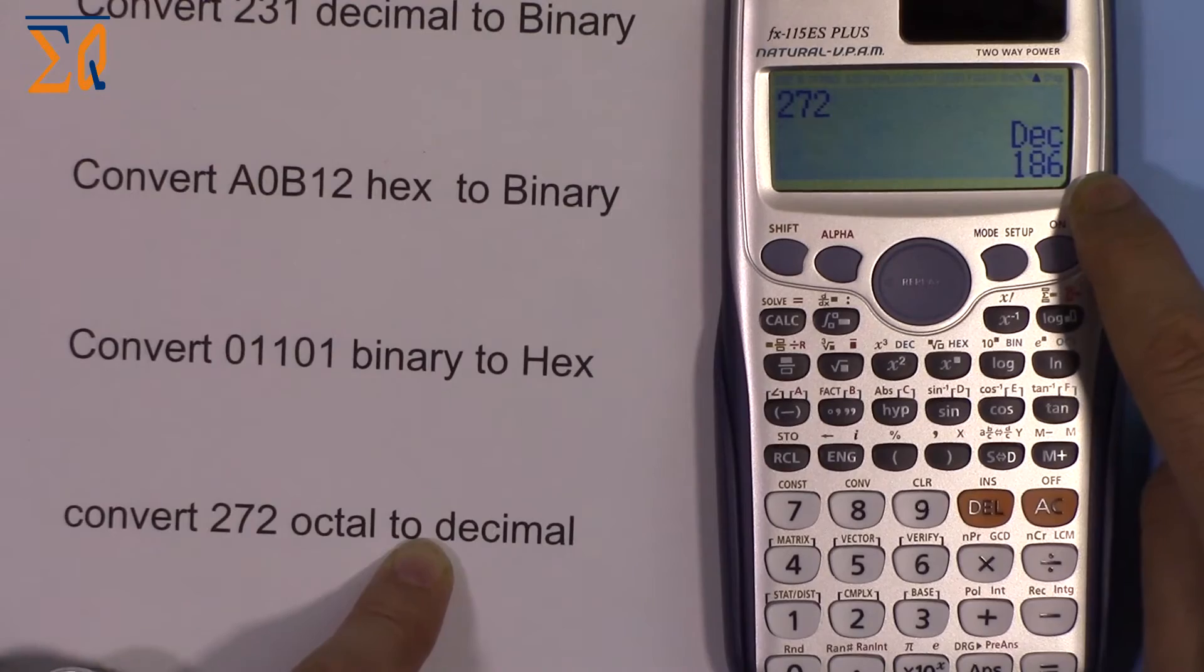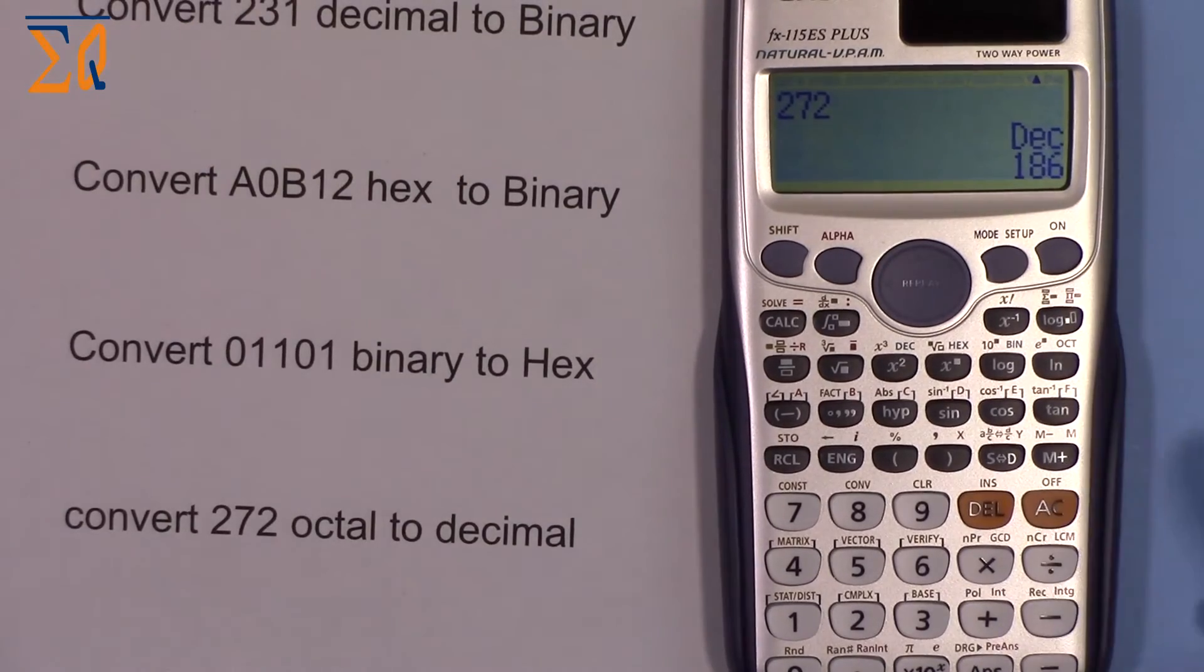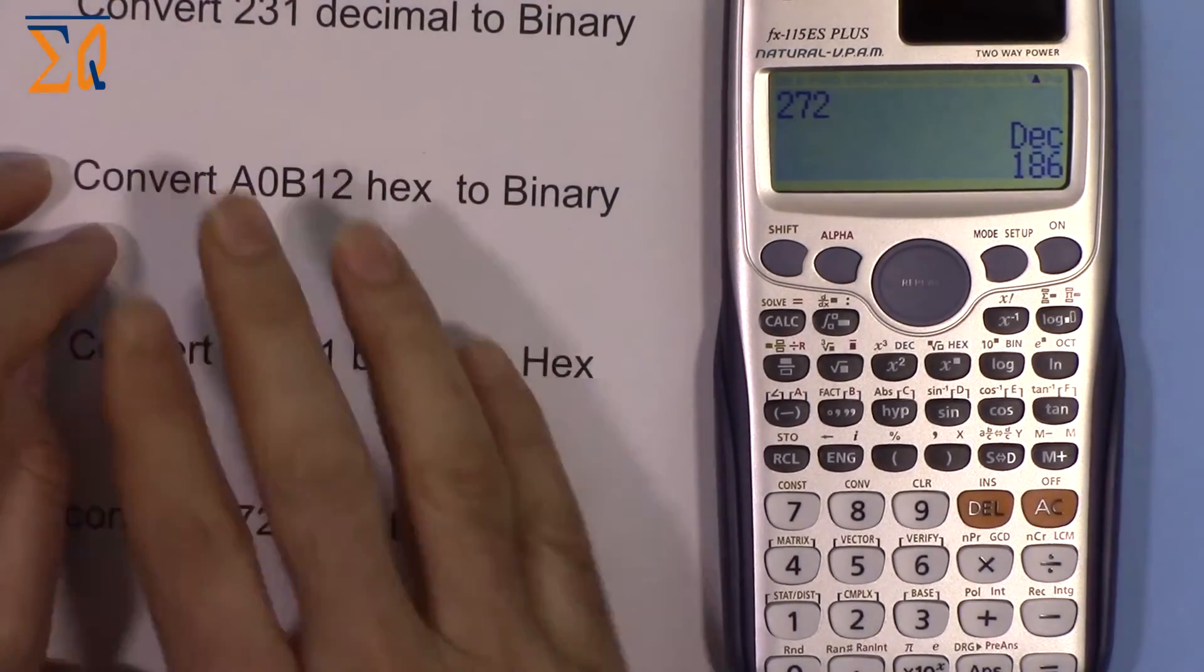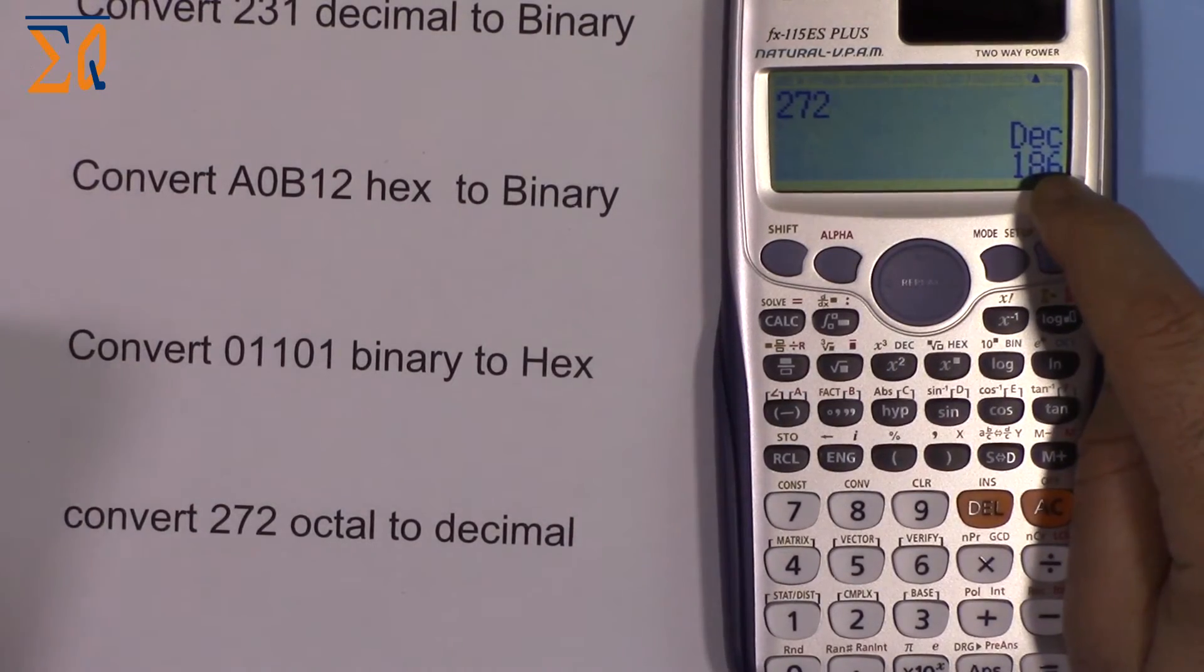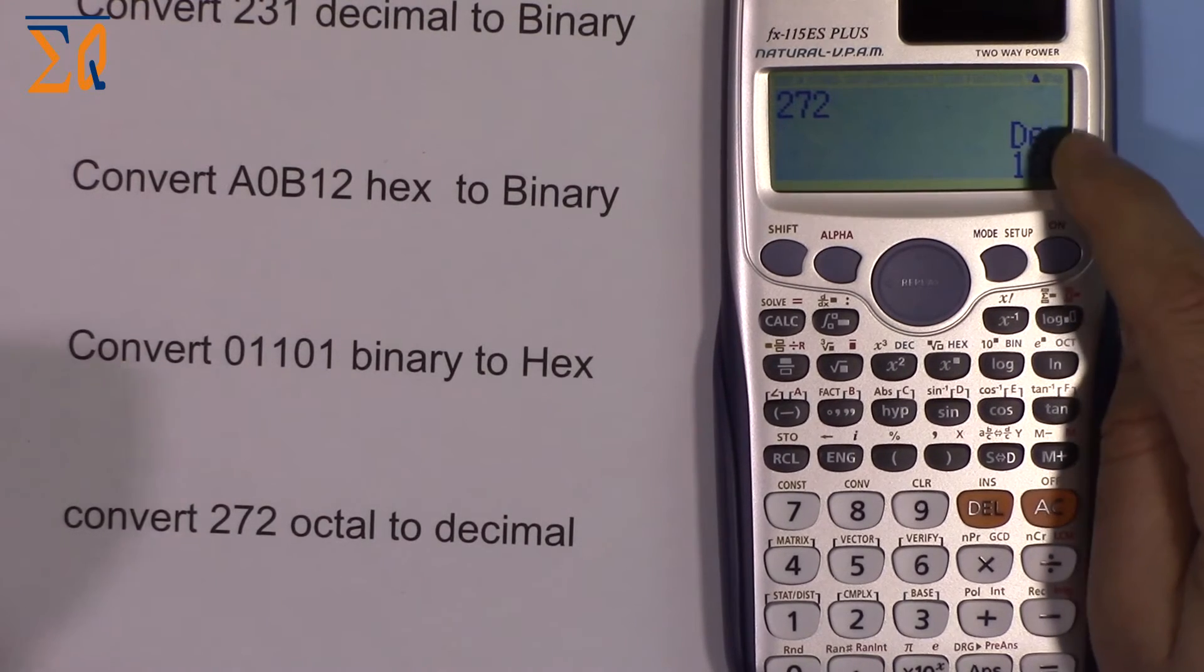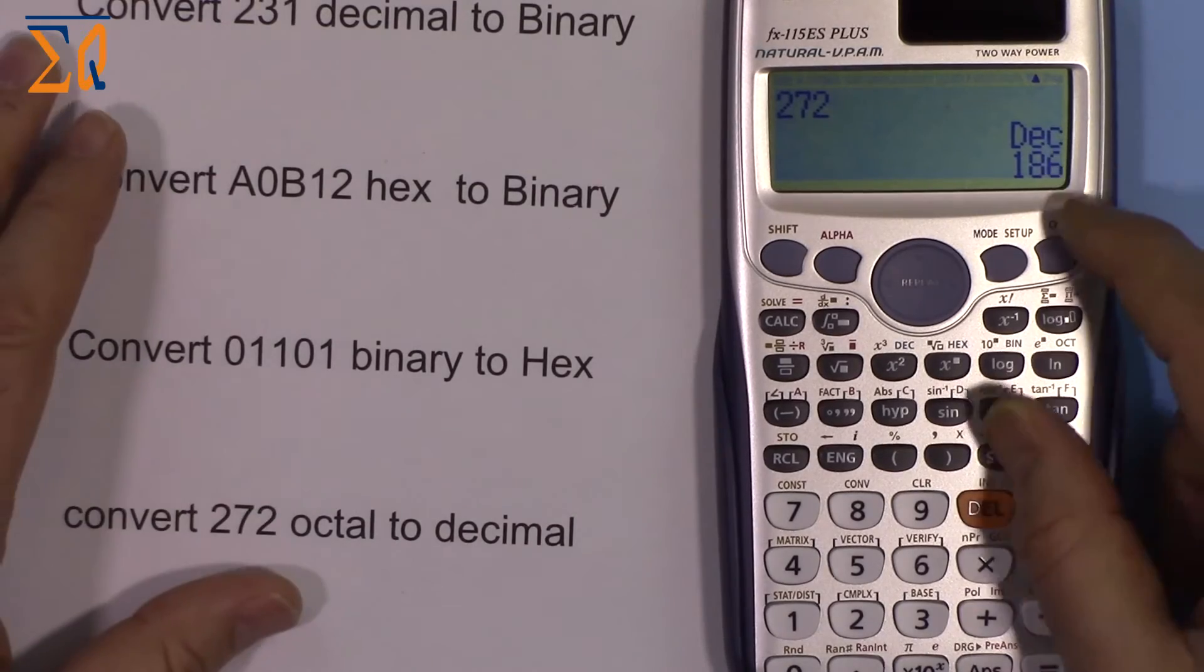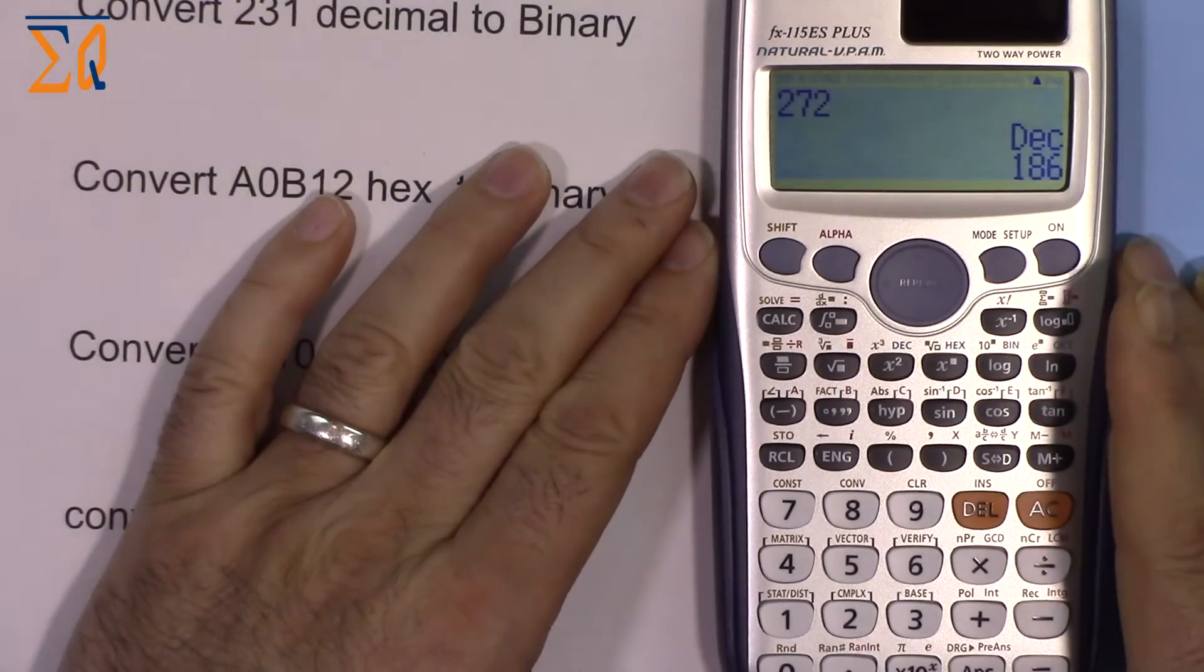These are the conversions from any value to any value. Remember, just enter the value and press equal sign. You must be in the mode of that value - if the value is hex you must be in hex initially, if binary then in binary. There are extra features for base mode calculations useful in digital courses.